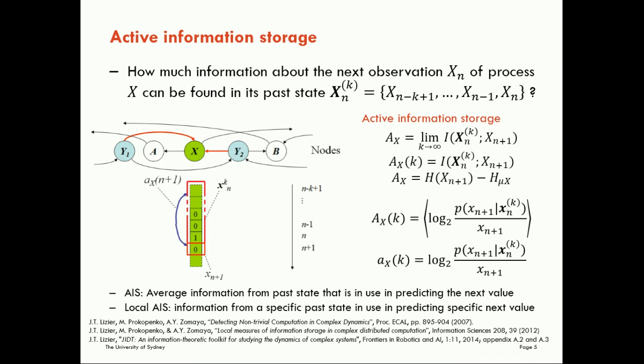Then we can also recognise that we could make a local or a pointwise active information storage. The information from a specific past state at time n or n plus 1 here, that is used in predicting the specific next value n from the specific past state from time n backwards.